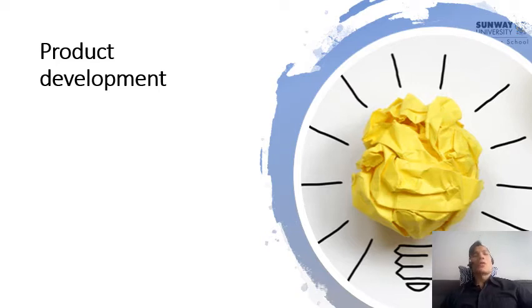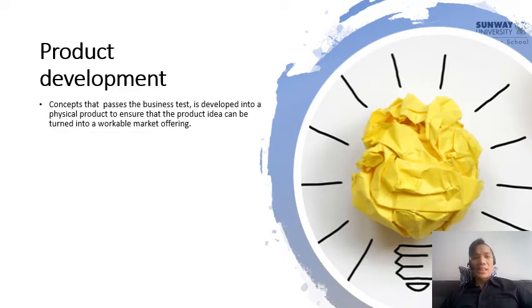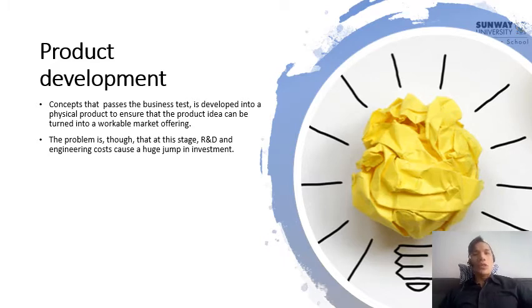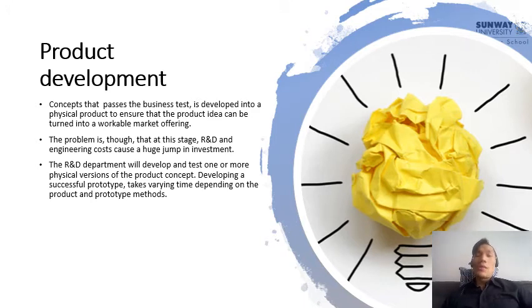If everything is favorable in terms of numbers and figures, we proceed to product development. The concept passes the business test and is developed into an actual workable product. R&D and engineering costs will jump significantly in investment at this stage. One way to keep costs down is to prototype a small sample and push it into the market to test its appeal. The R&D team develops the product into a successful prototype, varying in timing and prototype methods.